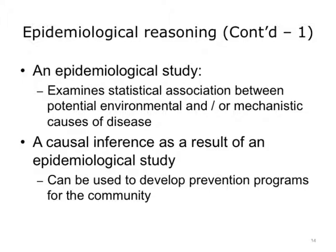An epidemiological study is used to examine the statistical association between potential environmental or mechanistic causes of disease. This type of study can be used to develop prevention strategies to reduce the incidence of disease within a community. Continuing with our example, if we see that women within a specific age range have an increased likelihood of being diagnosed with an aggressive form of breast cancer, which then reduces their five-year survival rate, we want to determine the best possible methods for increasing survival. One possible method would be to introduce new screening guidelines for younger women in order to increase the likelihood of identifying breast cancer at an earlier stage of progression. We can also determine that more research funding needs to be offered to researchers on identifying other potential environmental and mechanistic causes for breast cancer in young women.